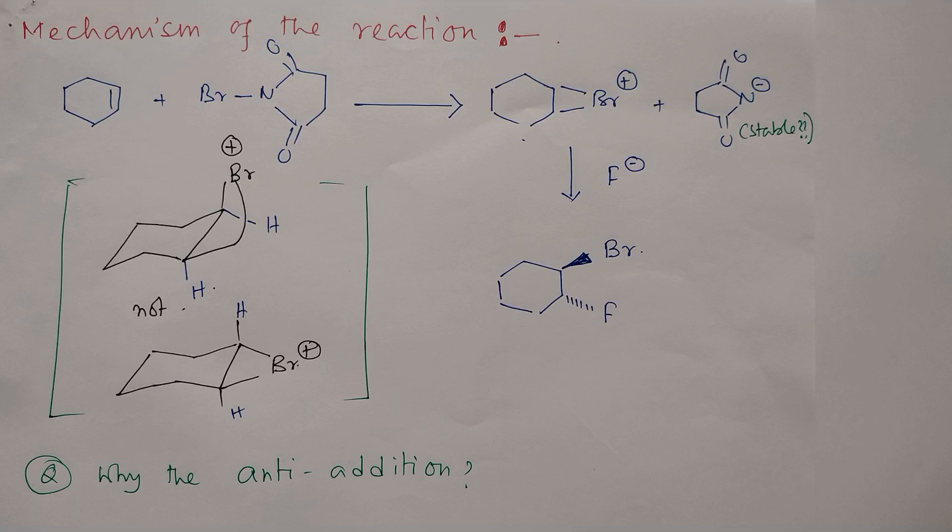As I told, this double bond can act as a nucleophile, so it will attack this electrophilic bromine center. Consequently, this bond will come here, so it will initially result in this cation and this bromine. This bromine has three lone pairs of electrons.